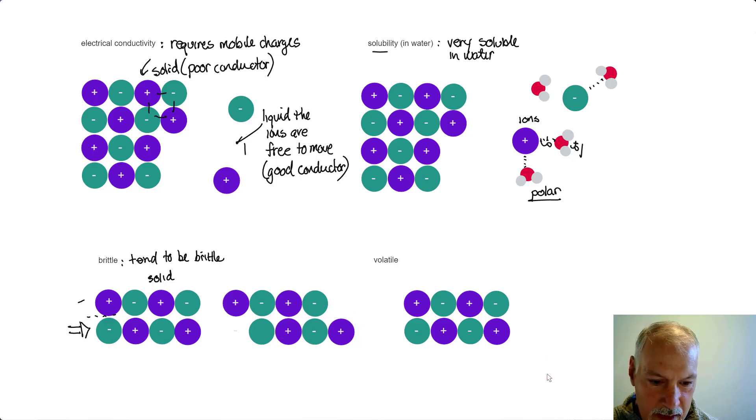What's going to happen now is we have a situation where we have a negative beside a negative, leading to repulsion. Similarly, a positive beside a positive. Once it reaches this state, there would be a net force causing these two layers to move apart from each other. That will result in a breaking of the crystal lattice structure, and as a result, it will come apart.